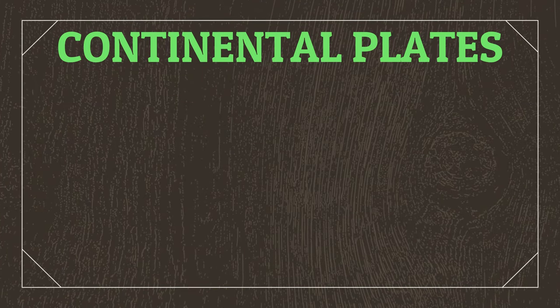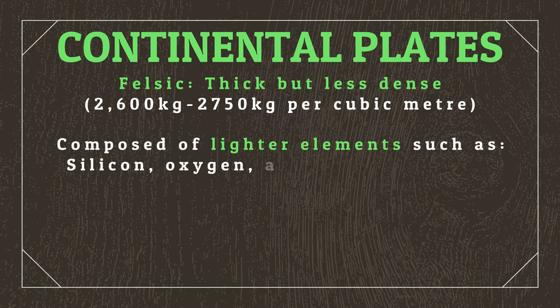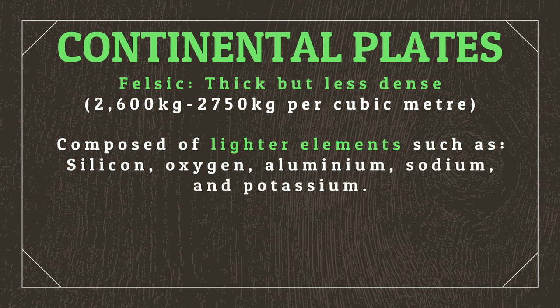If you're having trouble with this kind of visualization, there are applications out there that you can use that makes this process simpler. My personal recommendation is a free website called Xperilus, which I'll link in the description. Before we can put our plates into motion though, we have to determine which ones are continental and which ones are oceanic, the main difference being their composition. A continental plate is felsic, meaning that it's thick but less dense, composed of lighter elements like silicon, oxygen, aluminium, sodium, and potassium.